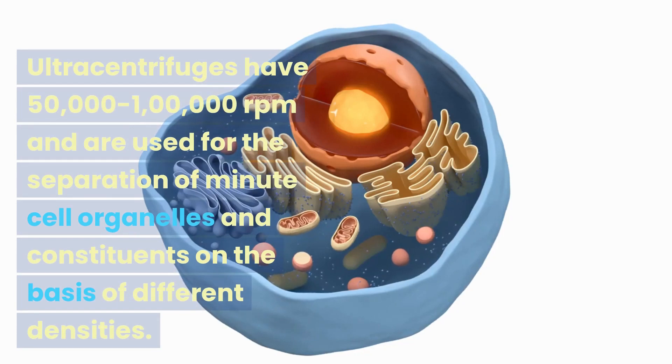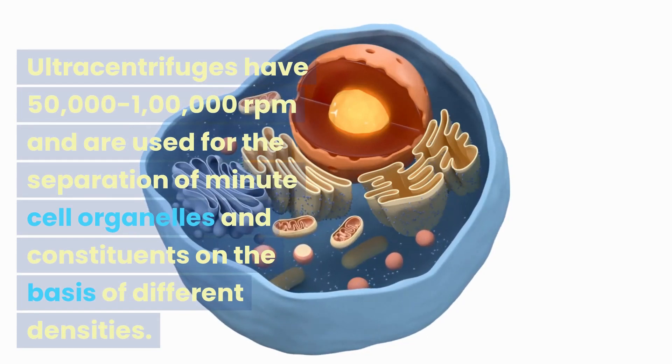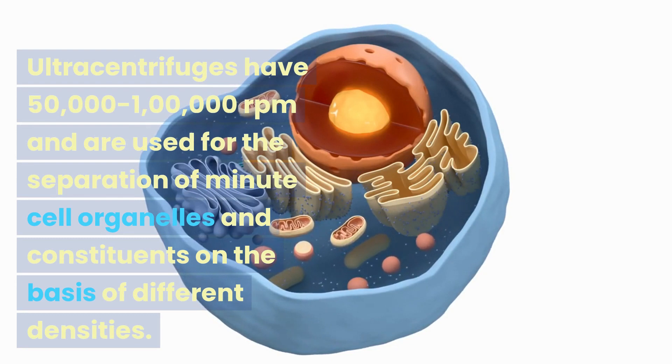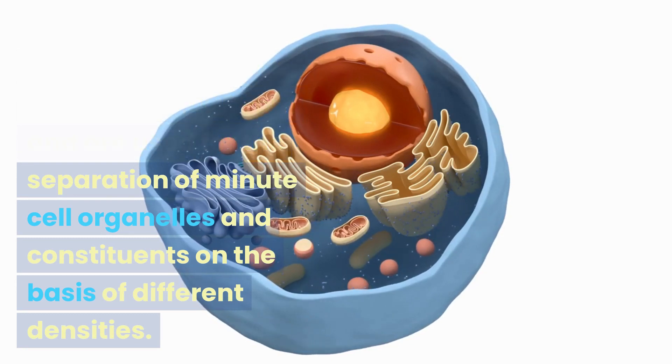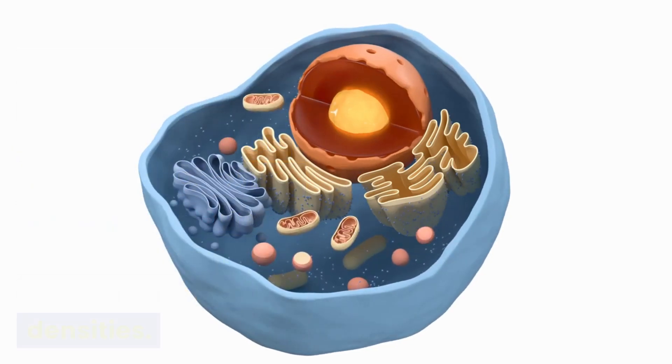Ultra-centrifuges have 50,000-1,000,000 RPM and are used for the separation of minute cell organelles and constituents on the basis of different densities.